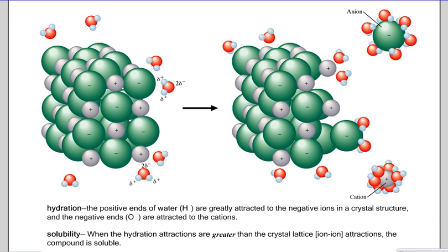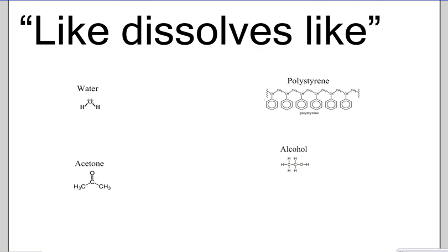Since hydrogen and oxygen have these partial charges, it allows water to dissolve many things by surrounding them in a process called hydration. The positive ends of water — the hydrogens — get attracted to the anions of, say, an ionic bond. If the attraction between them is greater than the attraction between the anion and cation, the water can surround the anion and pull it off the lattice. The cation can attract the oxygen in water, which also surrounds it. This is called solubility. The easiest way to know whether something dissolves is the phrase: like dissolves like. Water, a polar compound, can dissolve polar compounds and ionics, whereas nonpolar substances like acetone can dissolve nonpolar substances like styrofoam.